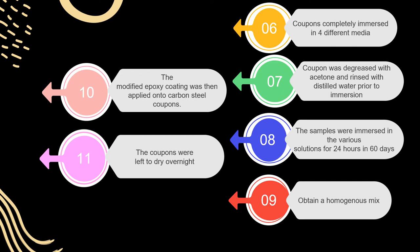To obtain a homogeneous mix, zinc oxide powder was poured in and continuously stirred for another 5 minutes. The modified epoxy coating was then applied onto carbon steel coupons by brush. The coupons were left to dry overnight in the lab at room temperature.